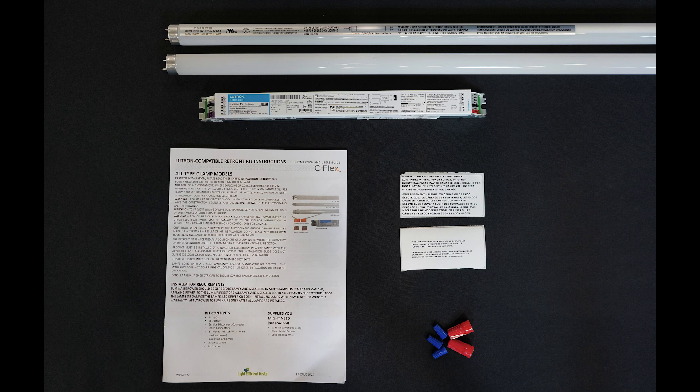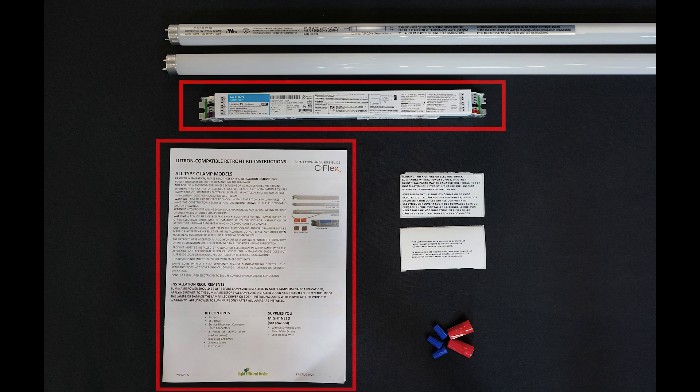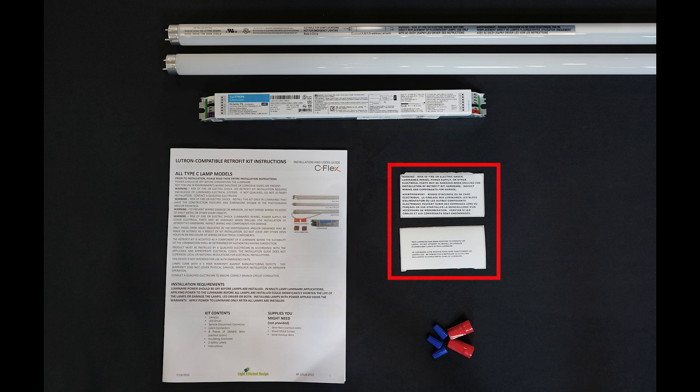Your UL Type-C Retrofit Kit will come with the following components: one or more T-Lead Lamps, a driver, installation instructions, and a retrofit label. You may also require some wire nuts.